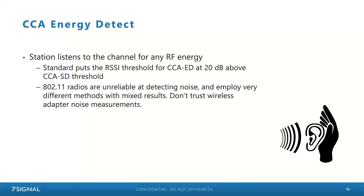The next CCA phase is energy detect, still at layer one. This is where the radio is just listening for RF energy — not specifically checking for an 802.11 modulated frame, but just checking if there is anything. This would pick up Bluetooth, cellular, ZigBee, and so on — things that aren't Wi-Fi that we're sharing the channel with. Energy detect is far less sensitive than signal detect; the standard says you need to be 20 dB better than your signal detect threshold, so you need a pretty solid signal for this to trip.